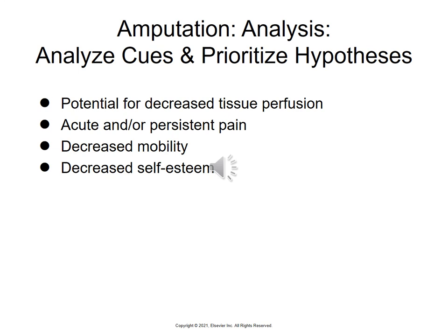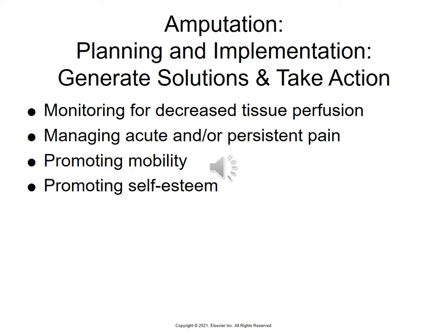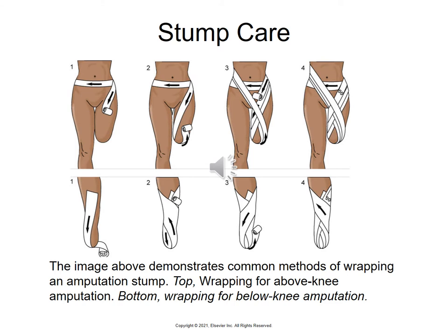Our nursing hypotheses include potential for decreased tissue perfusion, acute or persistent pain, decreased mobility, and decreased self-esteem. We monitor patients for decreased tissue perfusion by checking pulses, skin temperature, and color, while managing pain, promoting mobility, and promoting self-esteem.